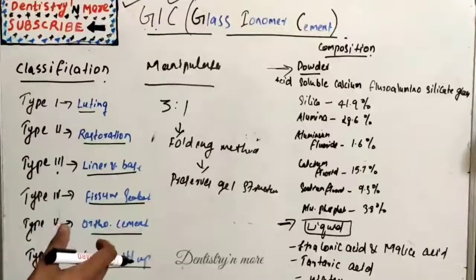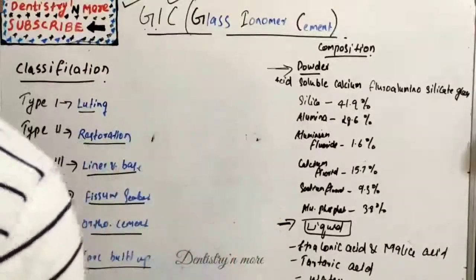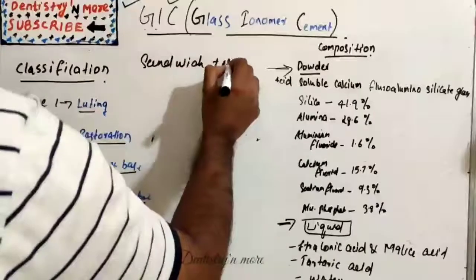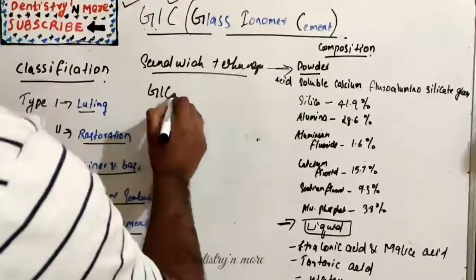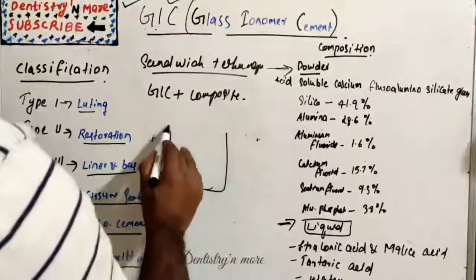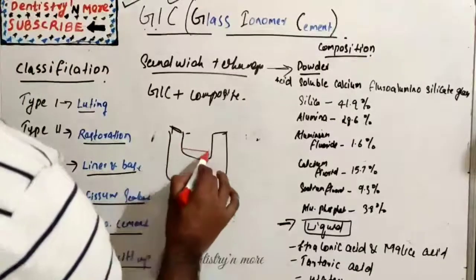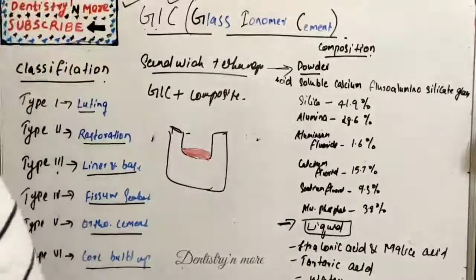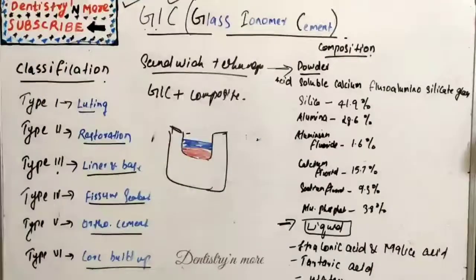Now let's learn what is sandwich technique. Sandwich technique is a commonly asked question. Sandwich, we know there should be two materials. So here we have GIC and composite. If this is our tooth and this is the cavity, what we are going to do is we are going to place two materials.